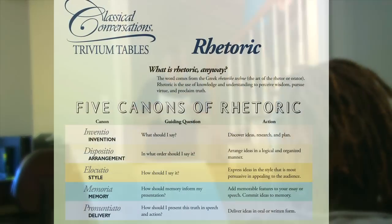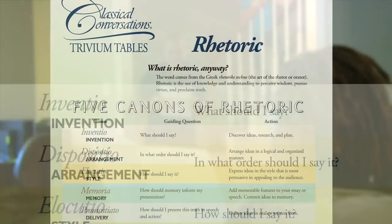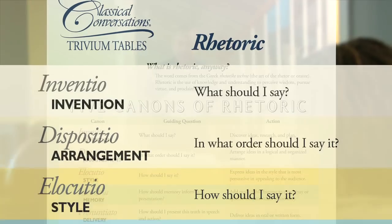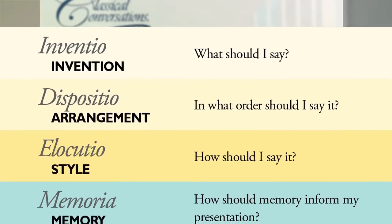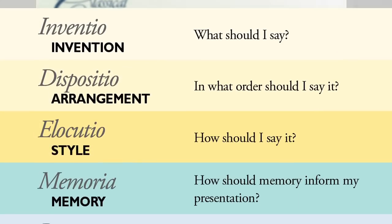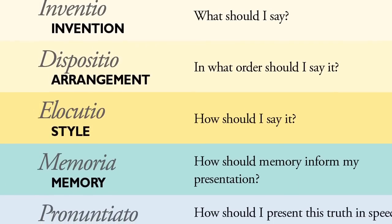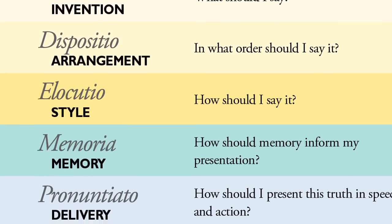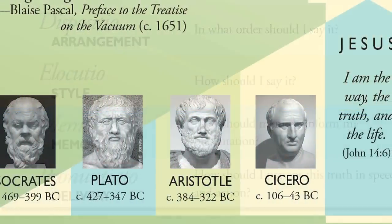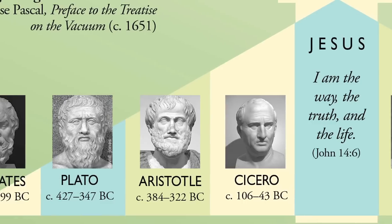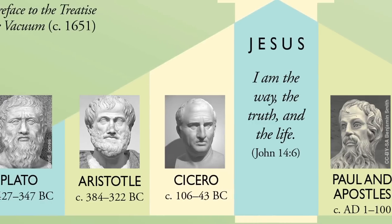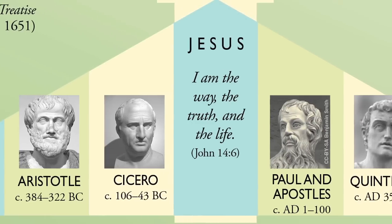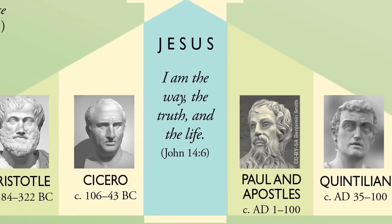We pursue this goal with the five canons of rhetoric as our guide: invention, arrangement, style, memory, and delivery. The five canons are the tools or stages of writing an essay. The Latin names are included since these tools have been in use since the Classical period.